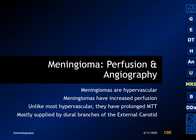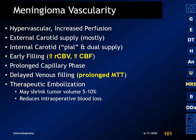Meningiomas are almost invariably enhancing and hypervascular masses with increased perfusion. However, unlike most hypervascular masses, they often have a prolonged mean transit time with slow movement of contrast through the capillary vascularity of the tumor. They're most commonly supplied by dural branches of the external carotid artery but may also be supplied by pial branches. Because of their hypervascularity, preoperative therapeutic embolization is often performed, which may shrink tumor volume by 5 to 10% and significantly reduces intraoperative blood loss.